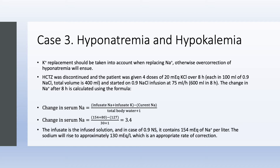We are going to use this formula, which we discussed when we covered hyponatremia. Change in serum sodium equals infusate sodium plus infusate potassium, minus current sodium, divided by total body water plus one. She weighs 60 kilograms, so total body water is approximately 30, plus one is the liter we're giving. We gave her four doses of potassium chloride — each dose is 100 mL of 0.9% saline containing 20 mEq of potassium chloride. So total KCl in the infusate is 80 mEq. We also gave 0.9% saline at 75 mL/hour, so over 8 hours that's 600 mL.